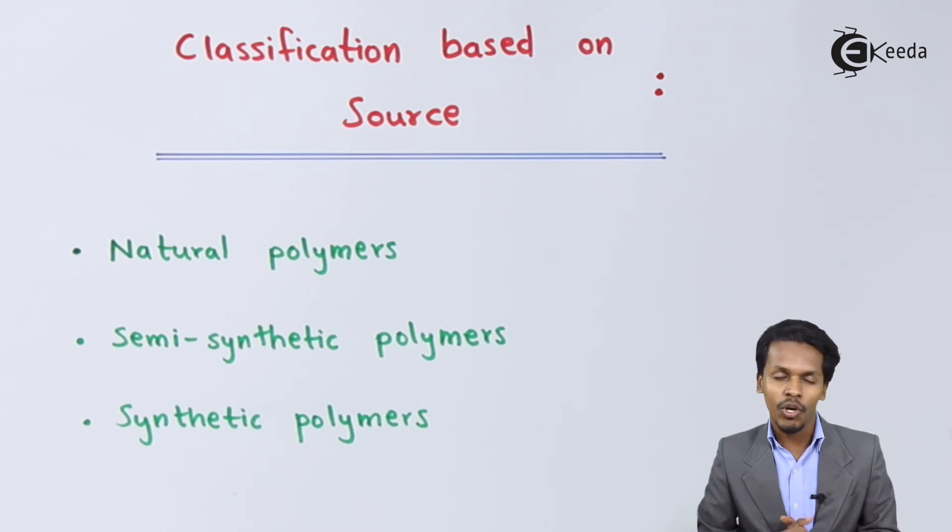For example, PVC - polyvinyl chloride - and polyethene are known as synthetic polymers. So this is the classification of polymers based on sources.